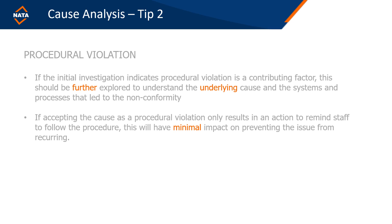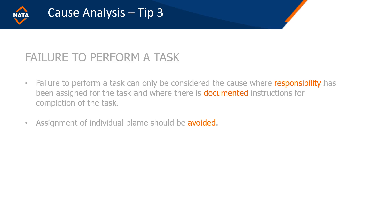Tip three: failure to perform a task. Failure to perform a task can only be considered the cause where responsibility has been clearly assigned — for example, specifying that John must do it every Tuesday at 2 o'clock. If John doesn't do it at that designated time, then you can say he failed to perform the task as designated. Otherwise it's very difficult to assign the cause. Also, avoid assignment of individual blame — someone has usually done something, but often there are underlying causes that result in the effect you see, and the person themselves are not the root cause.